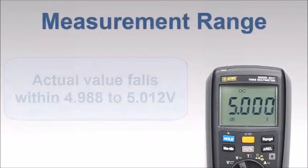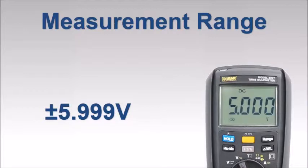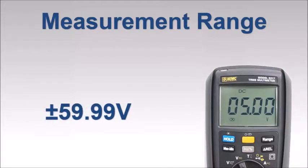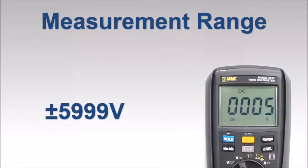This calculation highlights the importance of selecting the optimal measurement range. To demonstrate this point, watch what happens as we change the multimeter's range to plus or minus 59.99, 599.9, and finally 5,999 volts. Notice the decimal point moves to the right with each change of range. This indicates an order of magnitude increase in the least significant digit, and as a result, a commensurate increase in the value of one count.